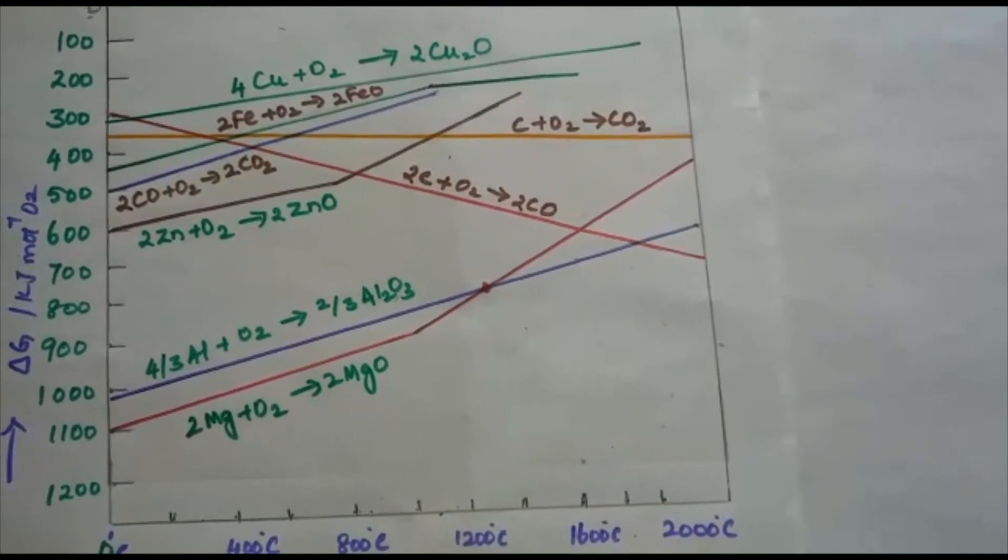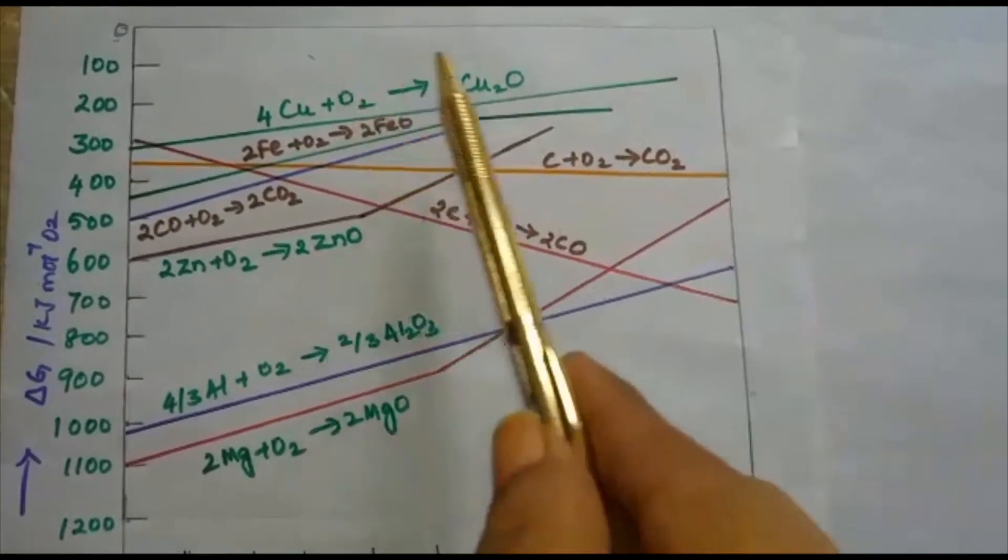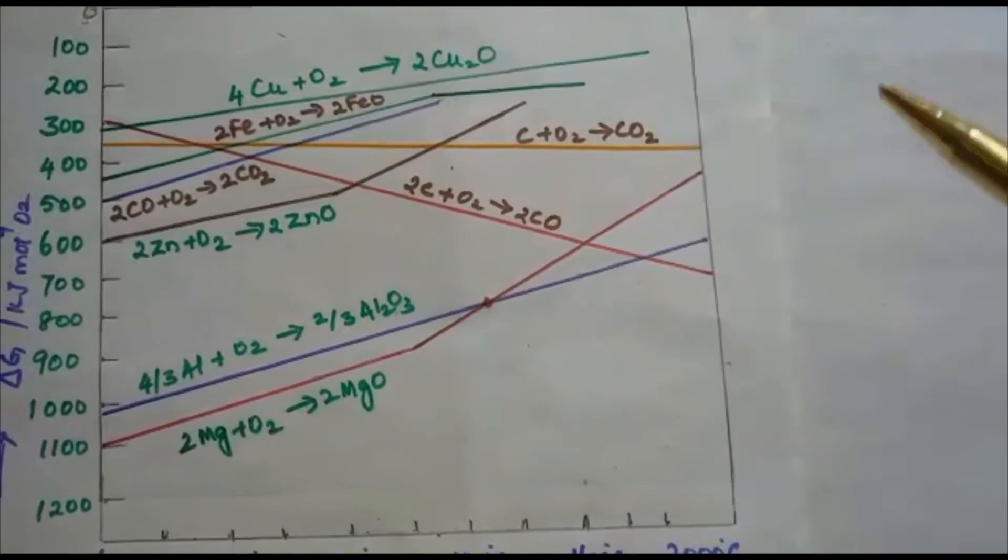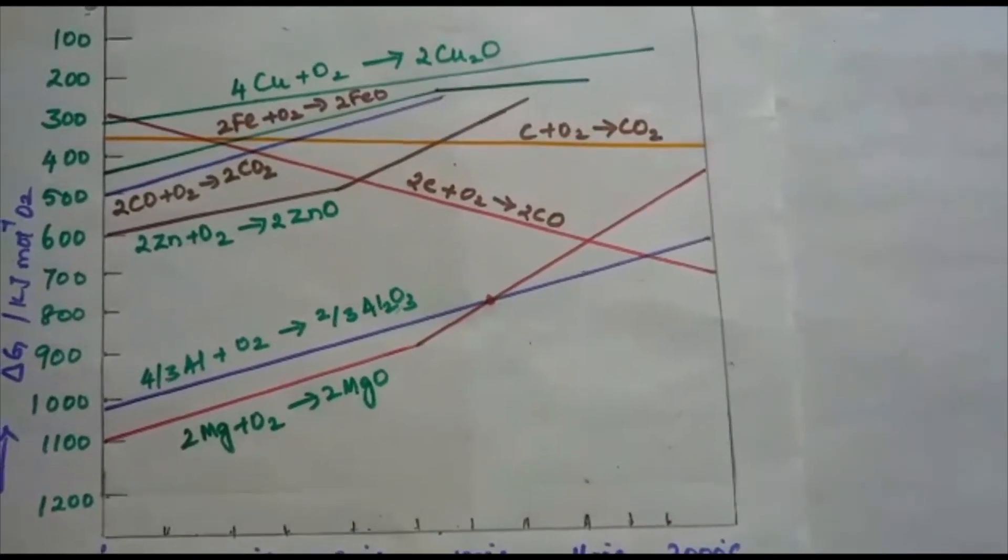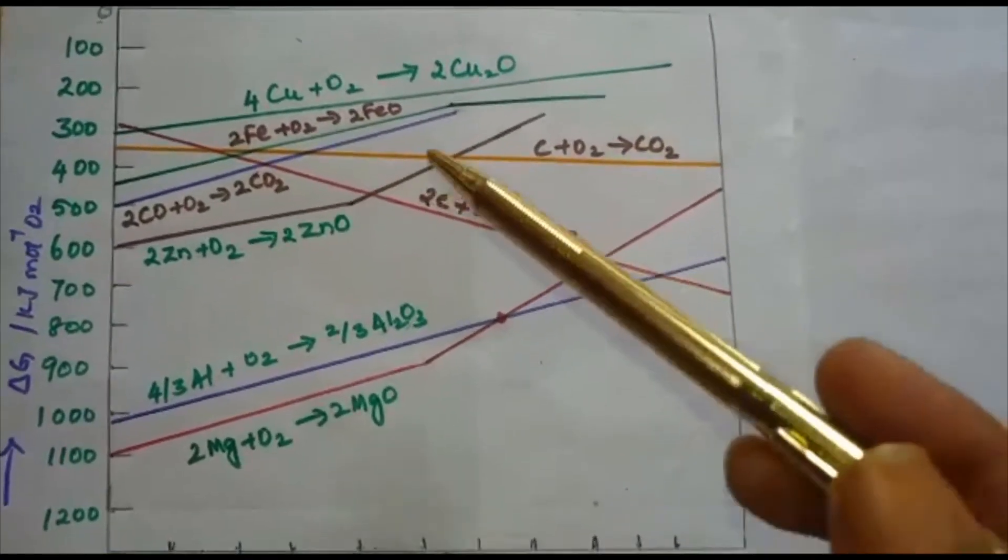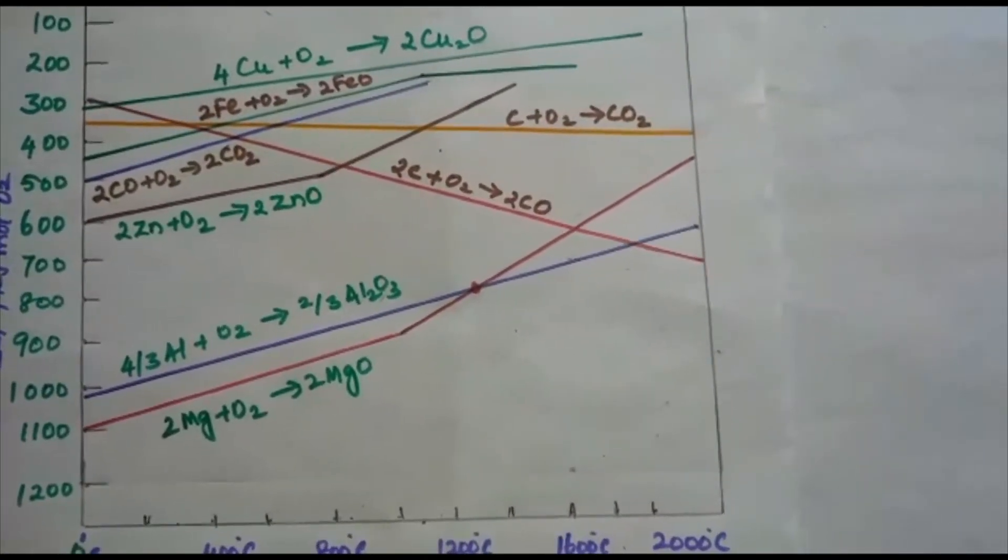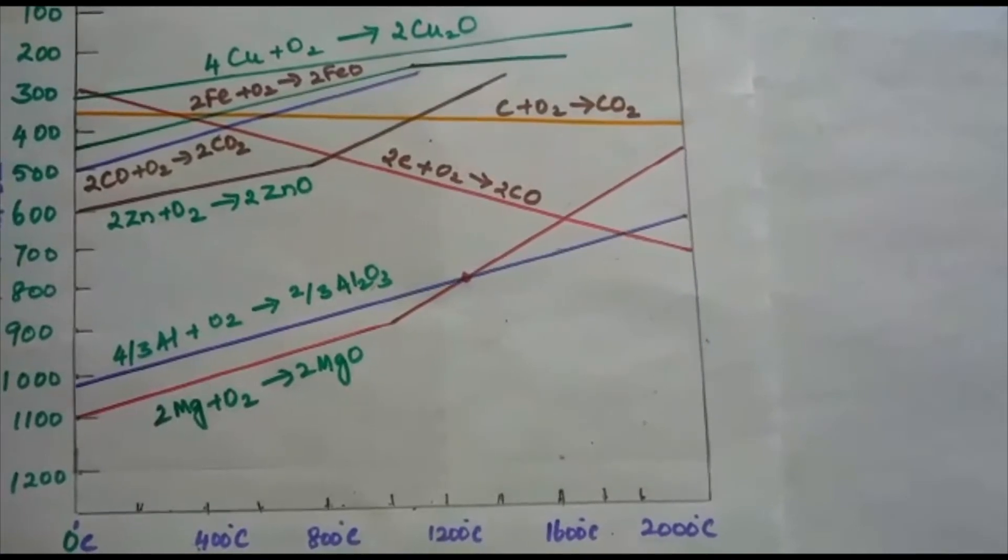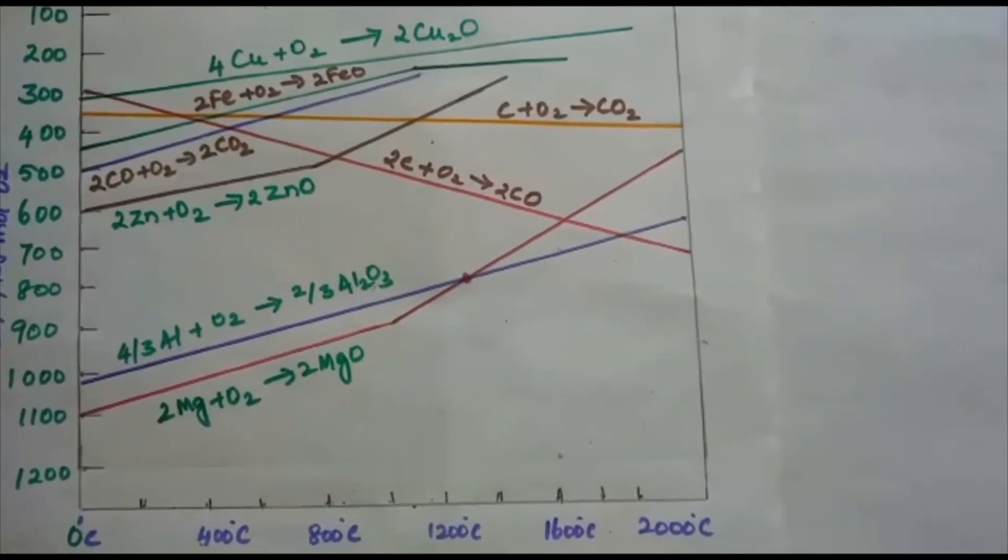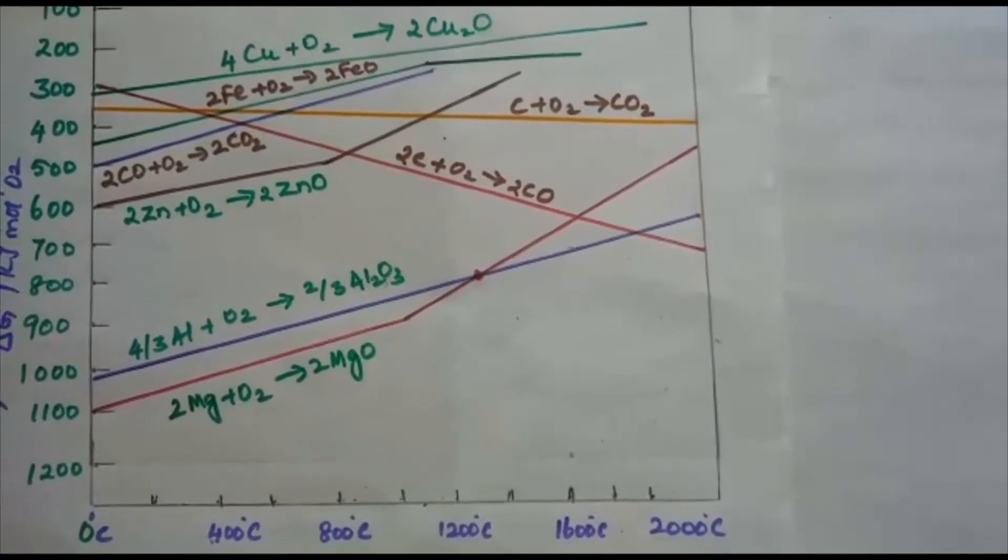If you see the limitations of Ellingham diagram, the graph simply indicates whether a reaction is possible or not. That is, the tendency of reduction with the reducing agent is indicated. This is because it is based only on the thermodynamic concepts. It does not say about the kinetics of the reduction process.